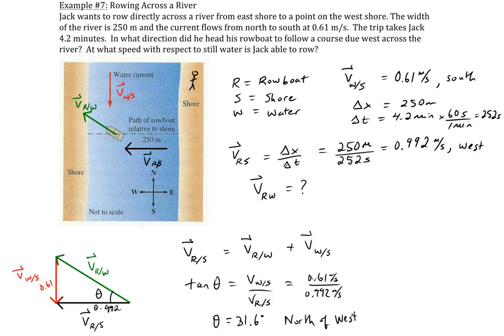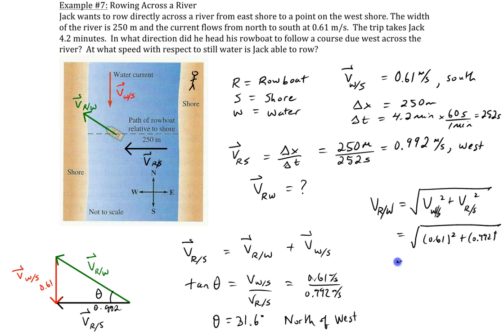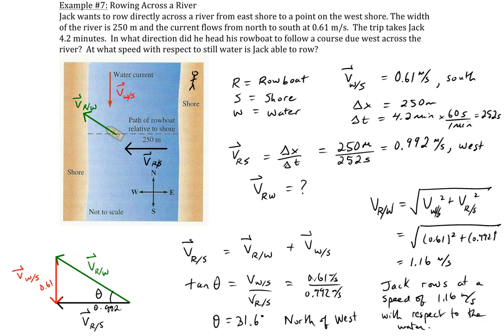The last part is to find the speed Jack is able to row at with respect to still water — the velocity along the hypotenuse. Using the Pythagorean theorem: the velocity of the rowboat with respect to the water equals the square root of (velocity of water with respect to shore squared plus velocity of rowboat with respect to shore squared) = √(0.61² + 0.992²), giving us a speed of 1.16 meters per second with respect to the water.